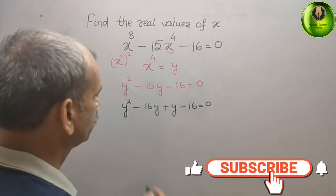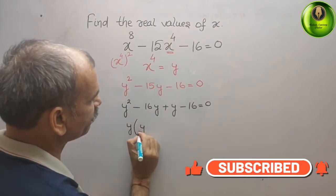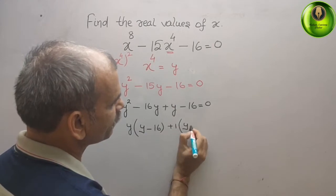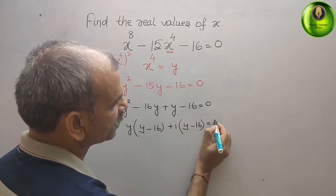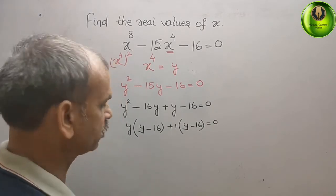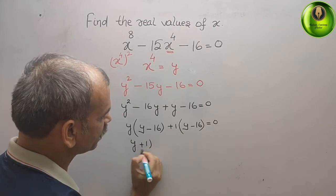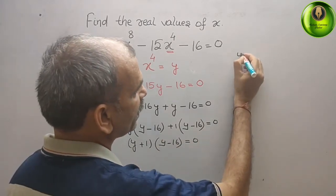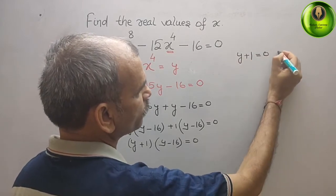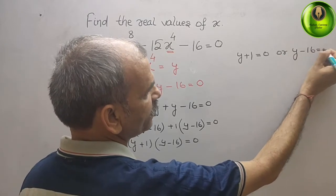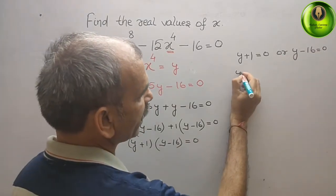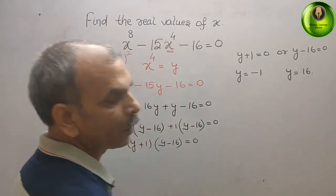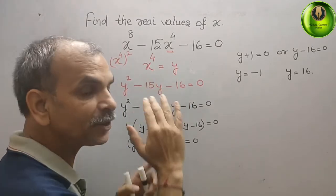Taking common factors: y is common from the first pair, giving y(y minus 16), and 1 is common from the second pair, giving 1(y minus 16). So the two factors are (y plus 1) and (y minus 16) equals 0. That means y plus 1 equals 0 or y minus 16 equals 0, giving y equals minus 1 or y equals 16. But we know that y is x to the power of 4.